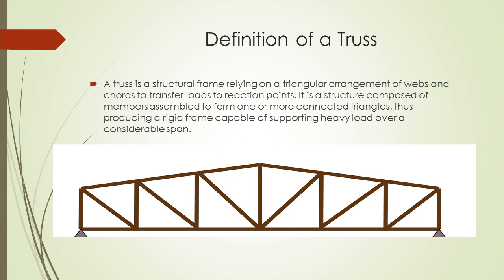A truss is a structural frame relying on a triangular arrangement of webs and cords to transfer loads to reaction points. It is a structure composed of members assembled to form one or more connected triangles, thus producing a rigid frame capable of supporting heavy load over a considerable span.